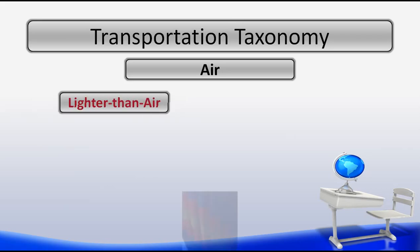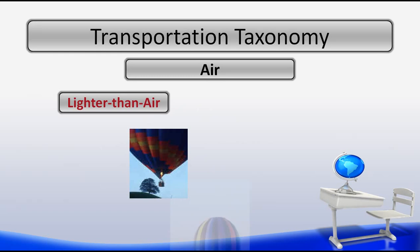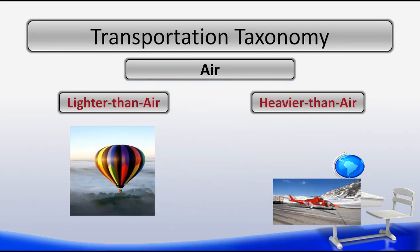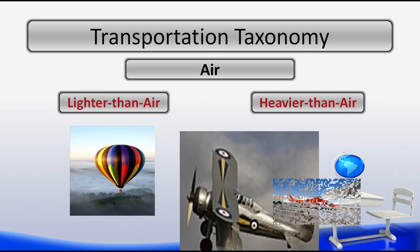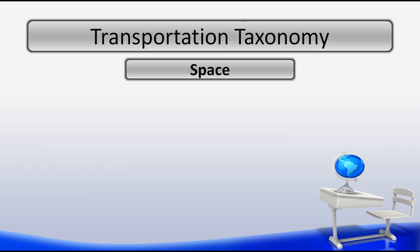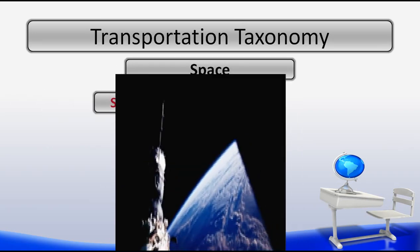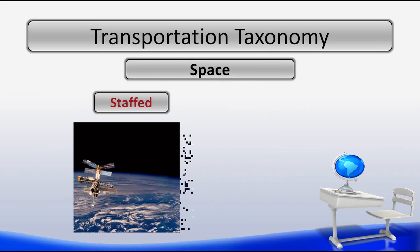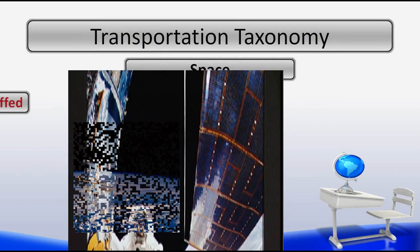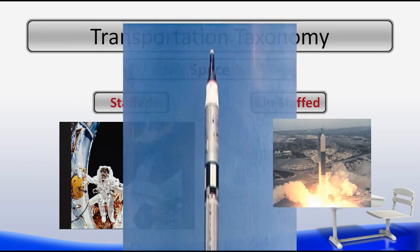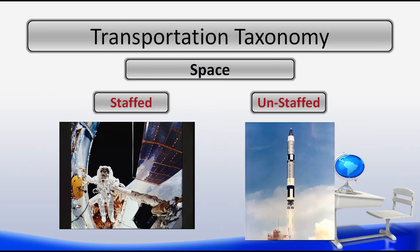Examples of air transportation based on lighter than air subsystems would include hot air balloons. Some examples of heavier than air transportation systems would include planes, helicopters, gliders, and a few more. And finally, in our last environment, examples of space transportation: we have staffed subsystems, which would include the space shuttle and space station. Some examples of unstaffed transportation would include rockets, missiles, and satellites.